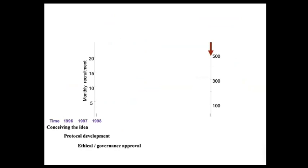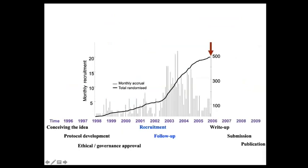To illustrate the timescale of research: in a study I was involved in, the idea was conceived in 1996, patient recruitment finished in 2006, the manuscript write-up started in 2006, and it was published in 2009. You can see how long the life of a large important study can be. This is one reason I advise considering systematic reviews — depending on the number of studies to include, they can be completed within a few months.